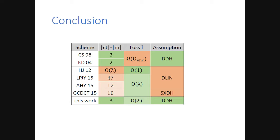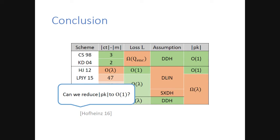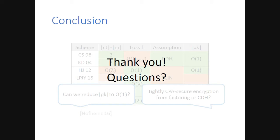To sum up, we build an efficient scheme that tightly reduces to DDH. The only drawback is the very large public key, which is also the case for most tight constructions but not for non-tight ones. A natural open problem is: can we reduce the size of this public key to a constant number of group elements? Some partial progress has been made by Hofheinz, who built a tightly secure signature with constant-size verification key, but it crucially relies on pairings. More broadly, can we build tightly secure CCA encryption from minimal assumptions such as RSA, factoring, or CDH? This concludes my talk. Thank you very much.